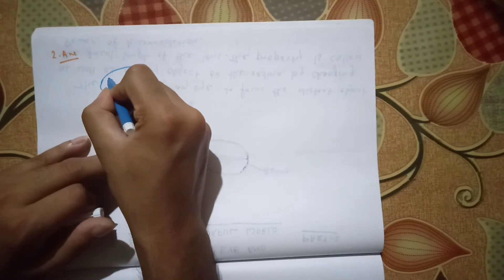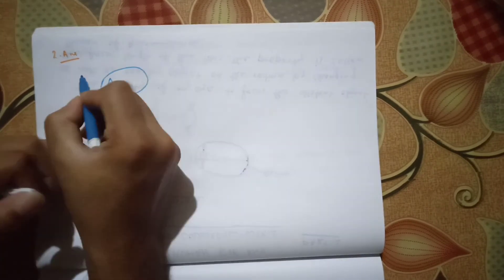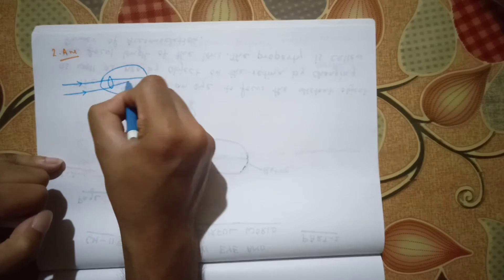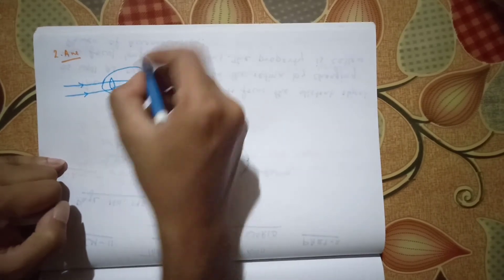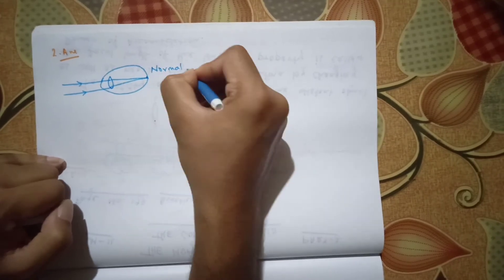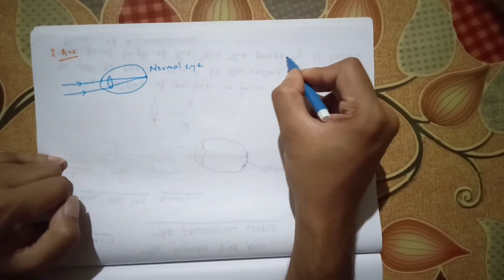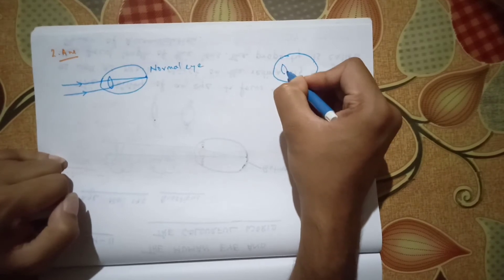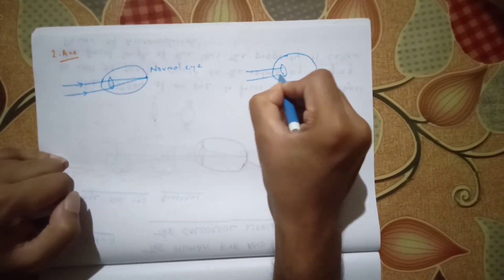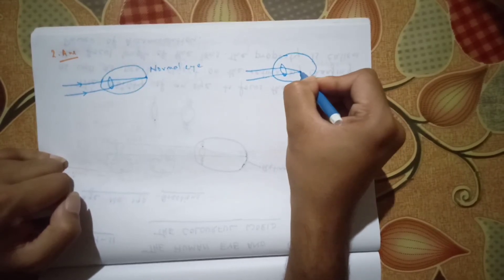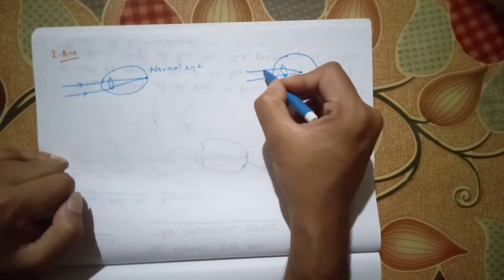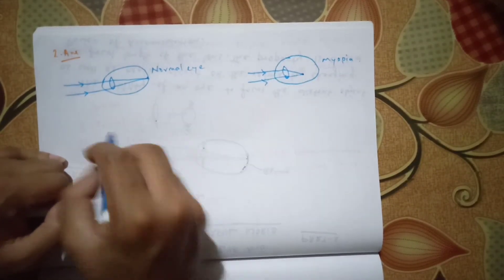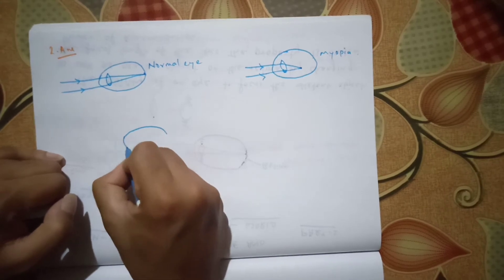The power should be negative, but what will be the number we have to find out. Let us check out some diagrams. Let us take this as a normal eye having lens, the two rays coming inside and converging on retina, forming the image. This is the normal eye. Now what will be the image in case of myopia? Let us take this as an eyeball again, this will be its lens. The rays coming in will converge in front of the retina.